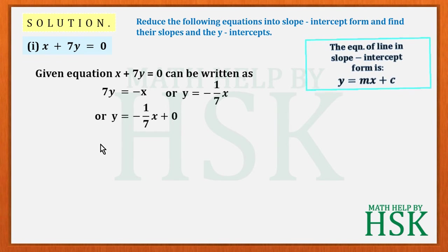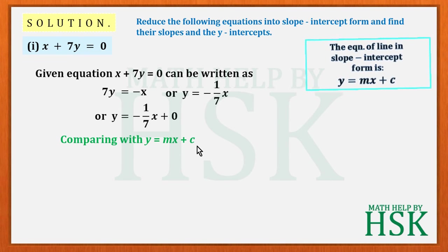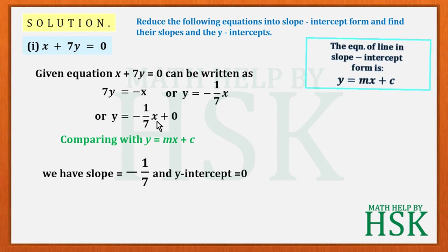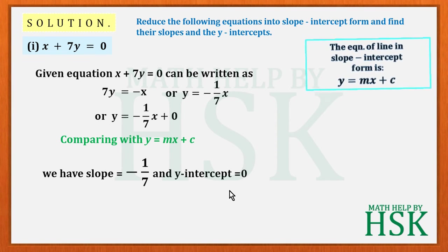Since the constant term is not present, I write plus zero, giving y = -1/7 x + 0, which matches the form y = mx + c. Comparing, the slope m = -1/7 because the coefficient of x is -1/7, and the y-intercept c = 0.